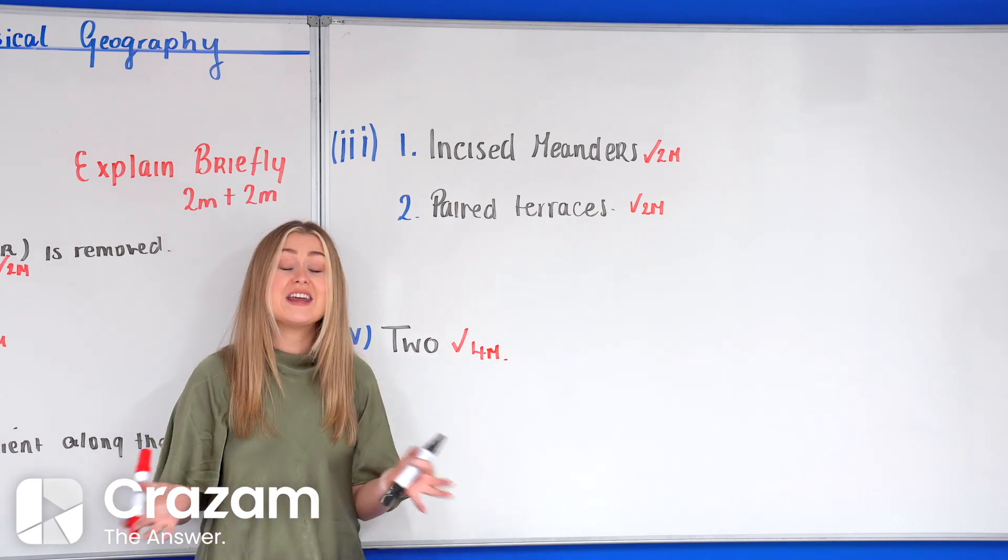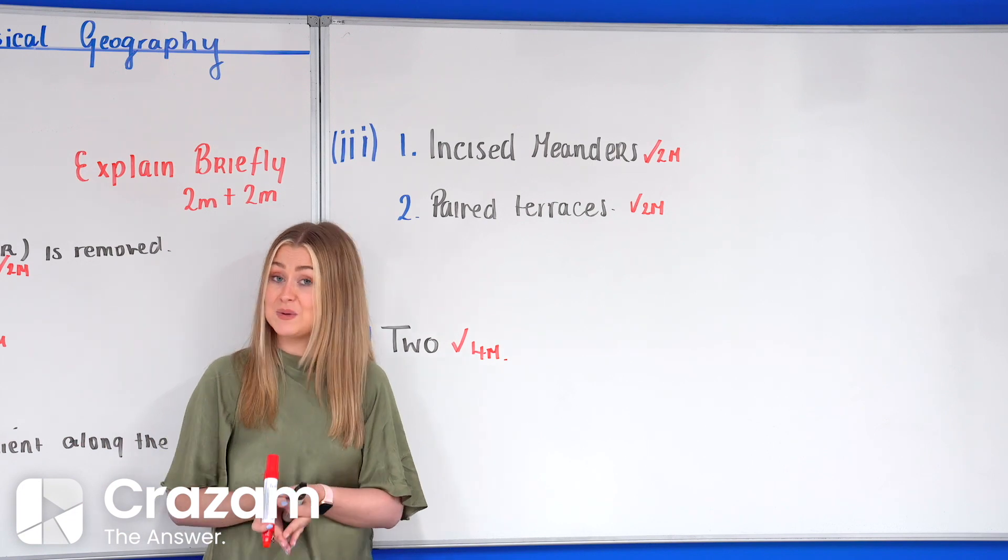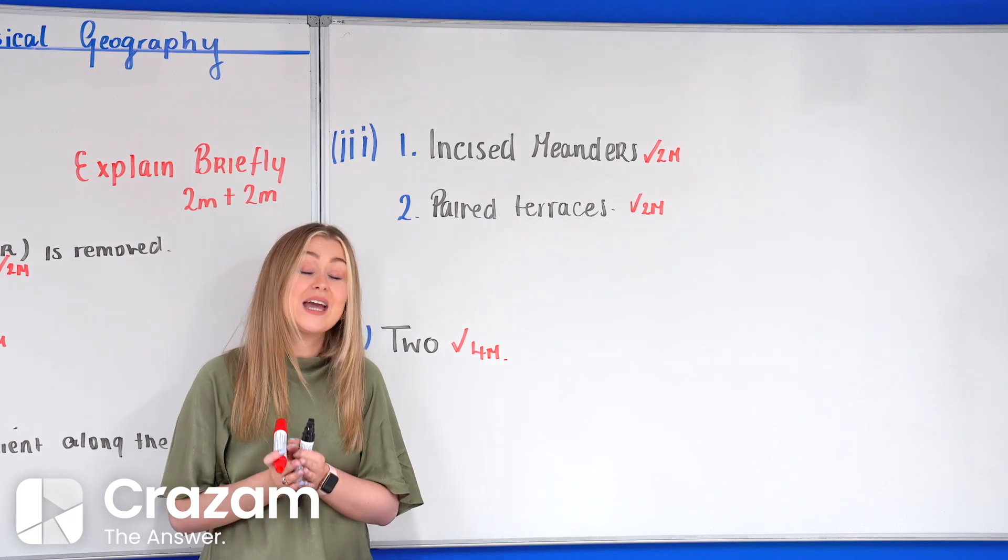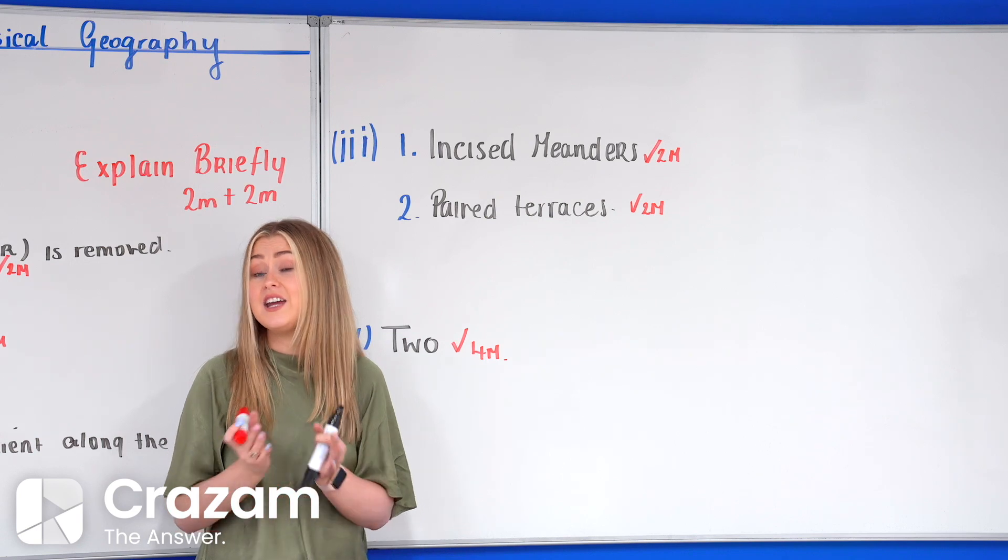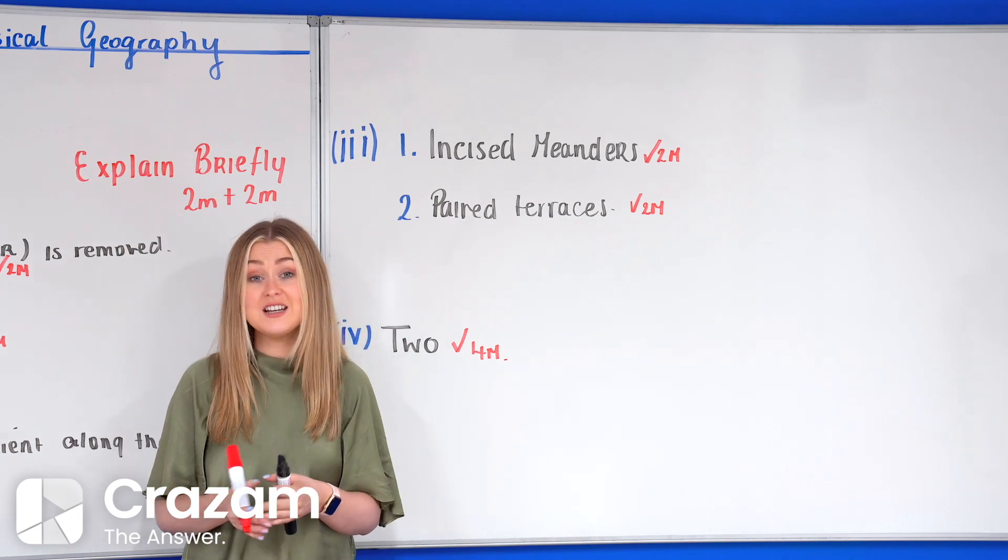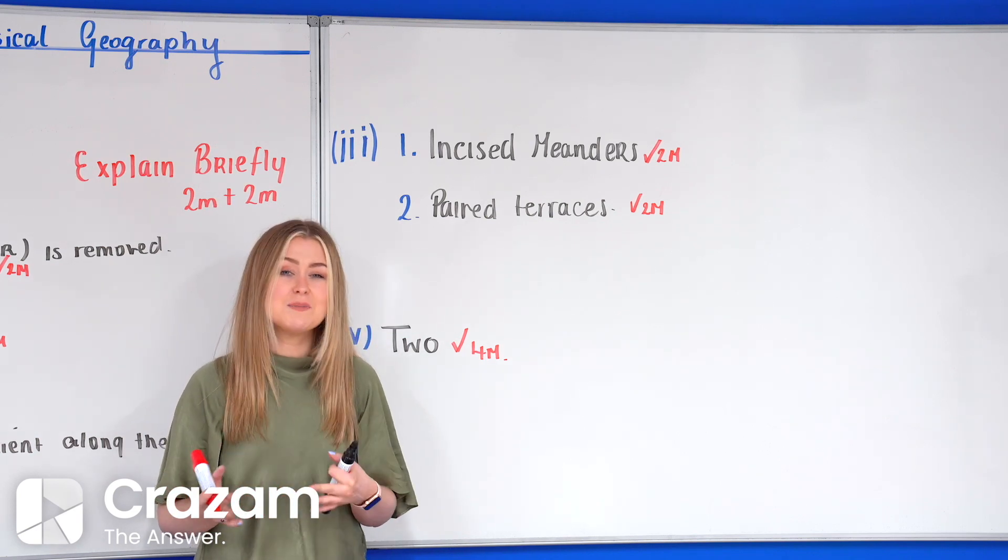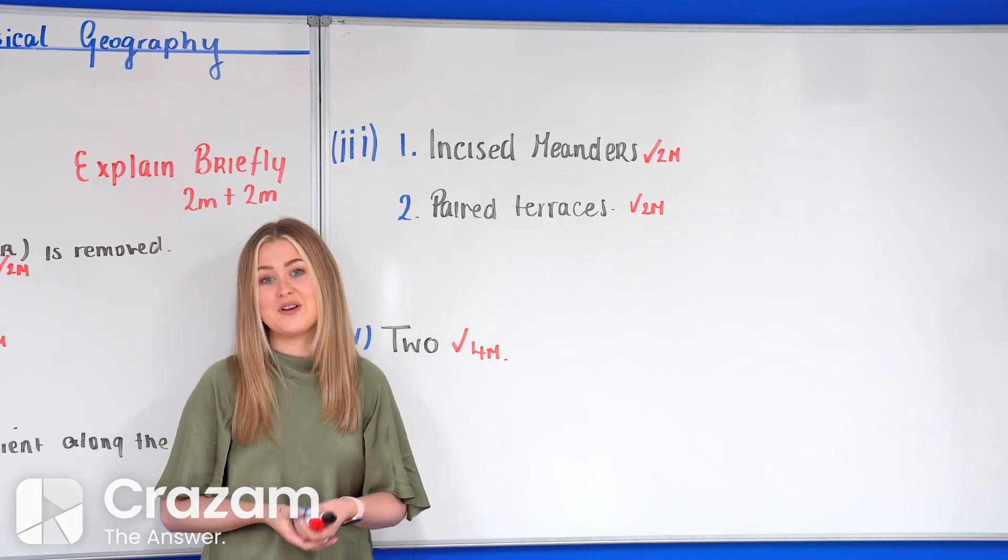Now in total this question is worth 20 marks as we can see here. It's going to be allocated between five and seven minutes of our time and here you're going to see for this question it's a physical geography question so this may appear again as question 1a, 2a or 3a.